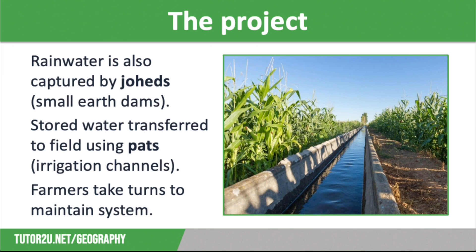Local farmers take turns to use the water, and when it is their turn they are also responsible for maintaining the channel to stop silt building up. The other important aspect of the project is education around how to conserve water. The charity has educated local people on how to conserve water effectively and how water conservation will reduce the risk of groundwater pollution, soil erosion, and desertification — increasing both water security and food security.